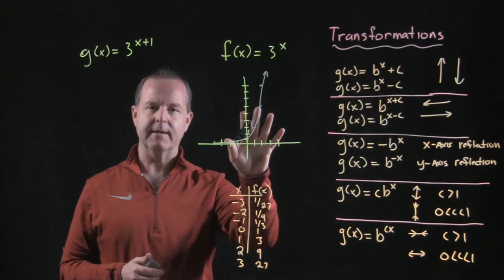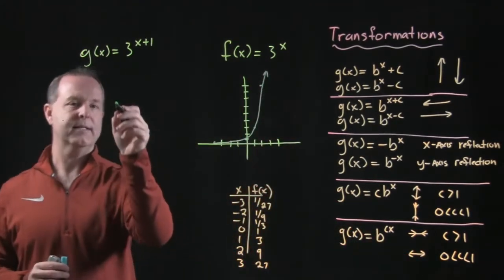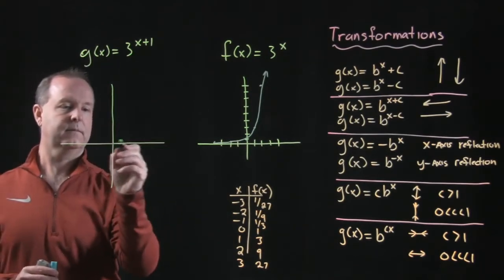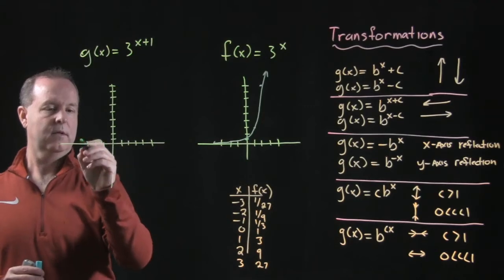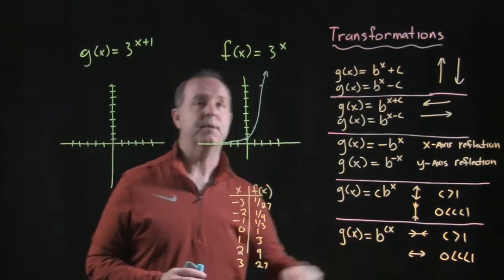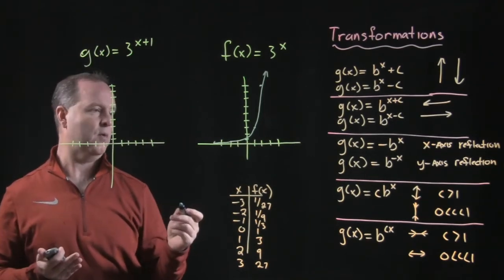So how do we use that then to determine what our graph over here will look like? Well, let's draw our basic... What do we know about this particular type of a transformation?